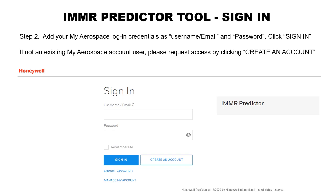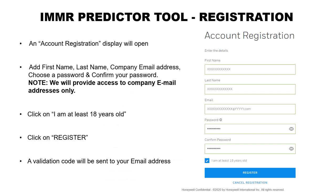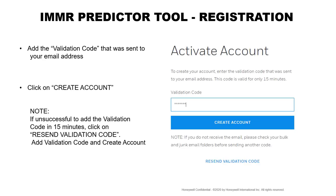Now add in your Honeywell Myerspace login credentials — username or email address and your password — and click Sign In. If you're not an existing Myerspace account user, please request access by clicking Create an Account. An account registration form will be shown on screen. Add in your first name, last name, company email address, and a password. We recommend that you access this tool using your company email address only. Then click on I'm at least 18 years old and Register. A validation code will be sent to your email address. When you register, an Activate Account tab will open. Add in the validation code that was sent to your email address and click Create Account.